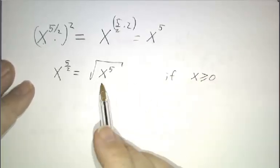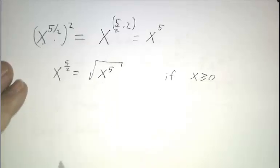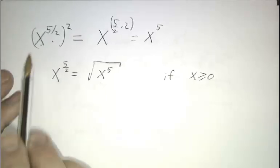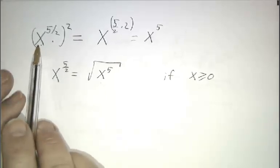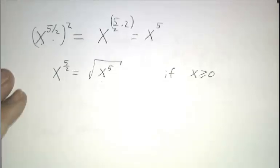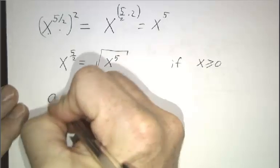And this only makes sense if x is at least 0. If x is negative, x to the 5th is negative, you can't take the square root of a negative number. So in general, when we do fractional powers, we only do fractional powers of positive numbers. We don't do fractional powers of negative numbers.